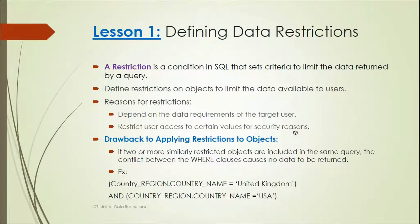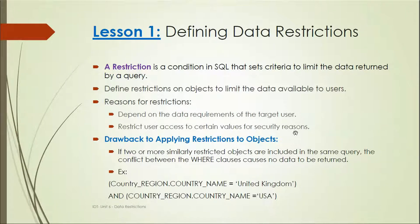Another reason is data requirements — users may come up with requirements that they don't want to see specific data on the report, so we restrict that data. While applying restrictions, there are some drawbacks as well. If two or more similarly restricted objects are included in the same query, conflict between the WHERE clauses causes no data to be returned. For example, if we have country name with conditions for both United Kingdom and USA,